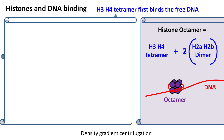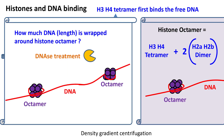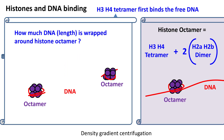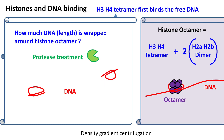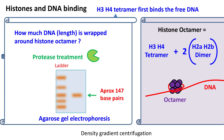Now the next question is: what is the length of DNA wrapped around the histone octamer? For this, if we treat the overall structure with DNase, then the free DNA gets digested. However, the DNA wrapped around histones remains intact. At this stage, if we give protease treatment, then the histone proteins will be removed. As a result, the DNA that was wrapped around histones is now released. Agarose gel electrophoresis of this DNA shows that the length is approximately 147 base pairs. Thus, the histone octamer binds 147 base pairs of DNA.